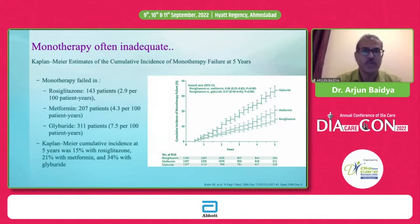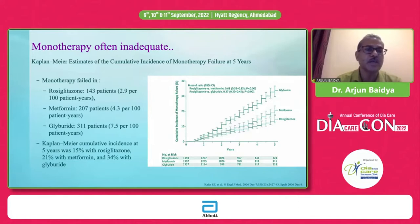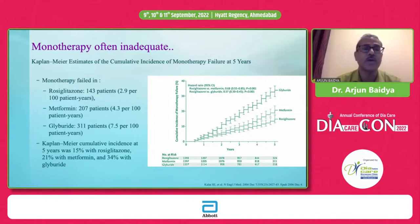Monotherapy very often fails to achieve target glycemic control. After a period of five years, rosiglitazone failed in 15% of patients, metformin failed in 21%, and glibenclamide — a very potent sulfonylurea insulin secretagogue — failed in 34% of cases. This is because of its insulin-dependent secretory mechanism, and because type 2 diabetes is a progressive disease with ongoing apoptosis and loss of beta cell function.